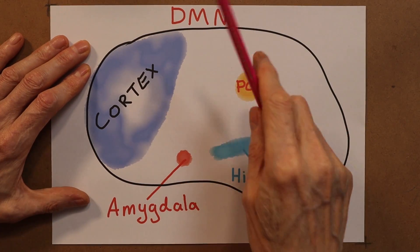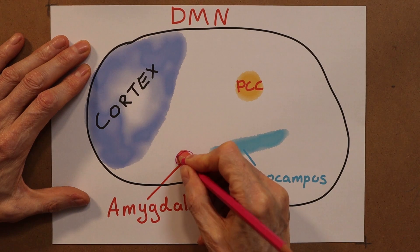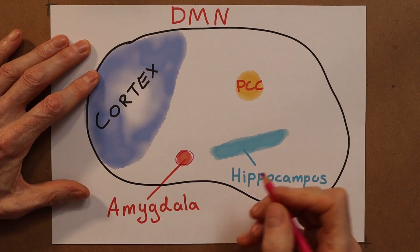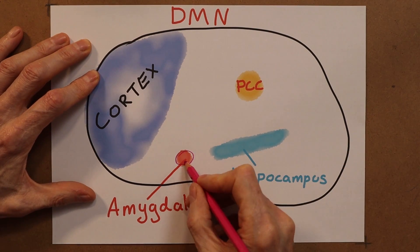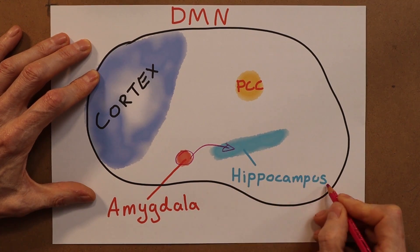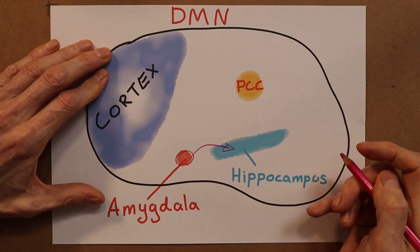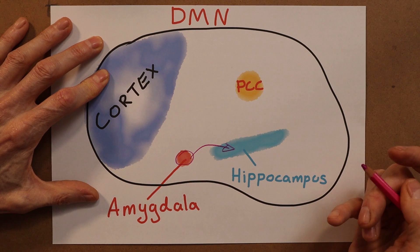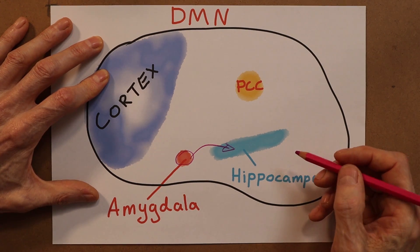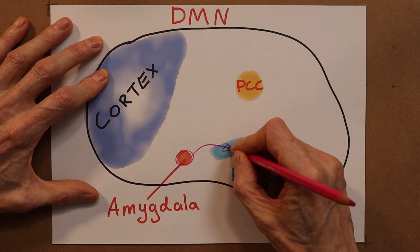The major components of the default mode network are the amygdala, which acts like a burglar alarm scanning the environment for potential threats. Once triggered, the amygdala asks the hippocampus — the memory banks of the brain — for additional related memories of past traumas and experiences. Unfortunately, in the anxious brain that even includes memories of previously being anxious.